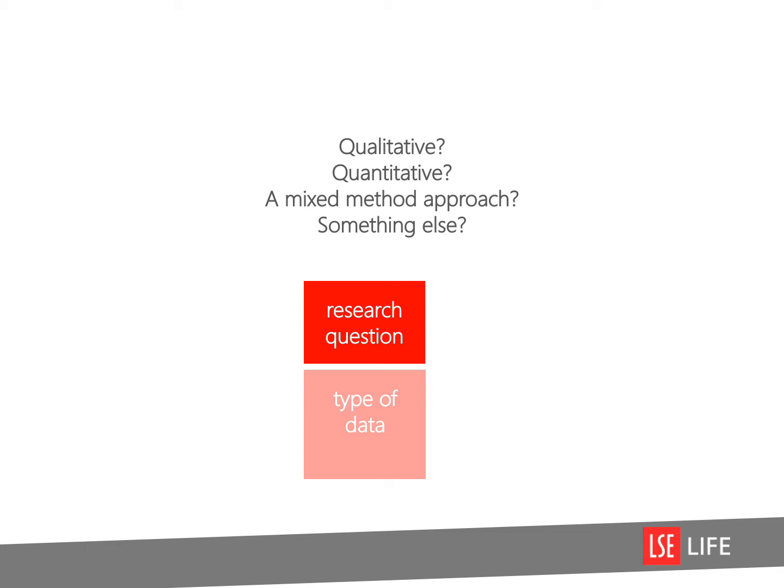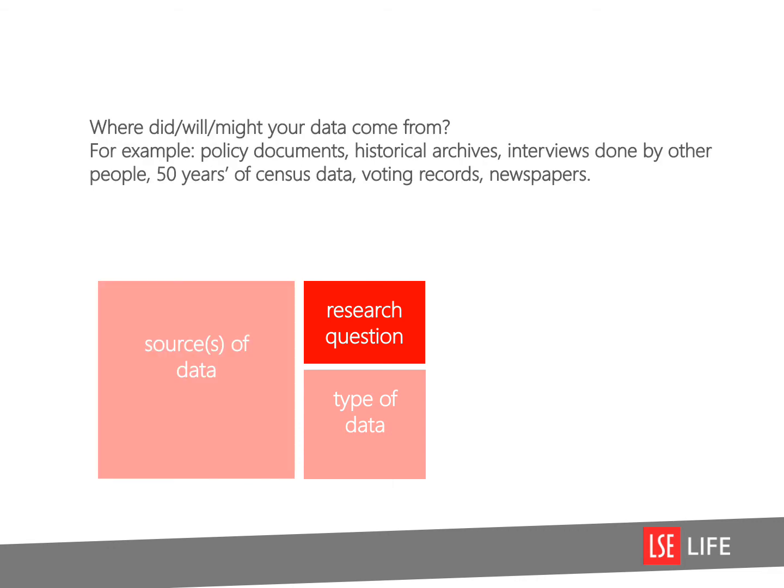So what type of data are you working with? Is it qualitative, quantitative, perhaps a mixture of the two, or is it something else entirely? Where is or will this data come from? We've given you some examples here: policy documents, historical archives, interviews done by other people, 50 years of census data, voting records, newspapers. Do you know where you are getting your data from? And especially relevant at the moment, do you know if that data is still going to be accessible to you while many places are in lockdown?